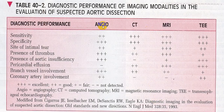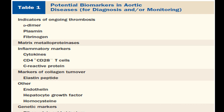Combining angiography with MRI increases sensitivity. Transthoracic and transesophageal echocardiography are helpful mainly for thoracic aorta, arch, or ascending aortic aneurysms. Biomarkers useful to indicate thrombosis include D-dimer. Inflammatory biomarkers such as cytokines and C-reactive protein may also be helpful. Collagen turnover markers, elastin peptides, endothelin, hepatocyte growth factor, homocysteine, and genetic markers like ribonucleic acids can also be utilized.